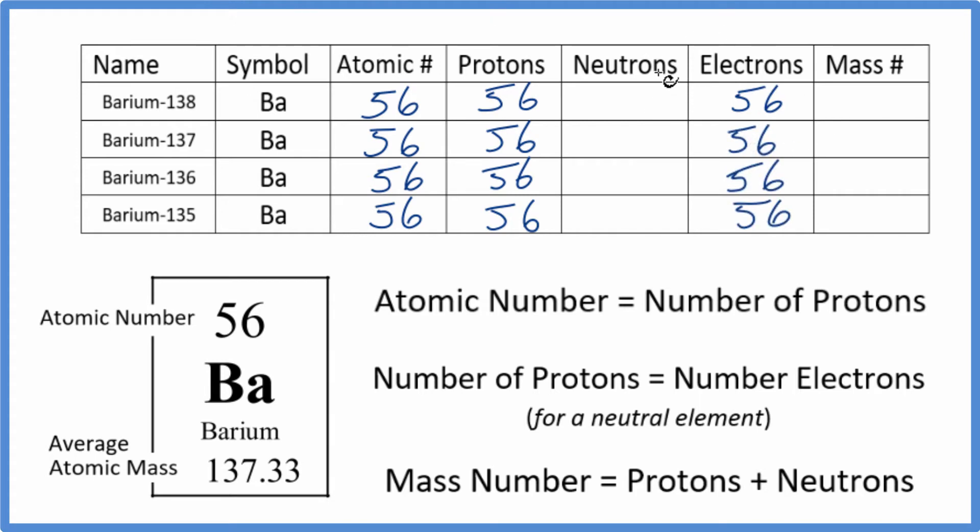Often when you're given this table you'll be given neutrons or mass number. So let's figure this out for each isotope here. For barium-138, that 138 there tells us the mass number. So if we have a mass number of 138,